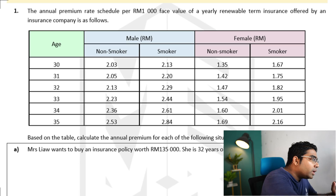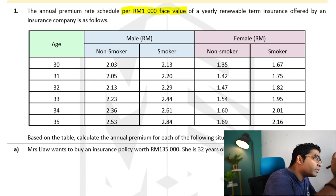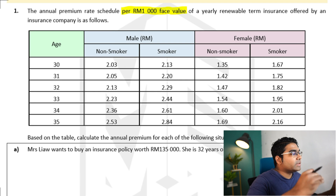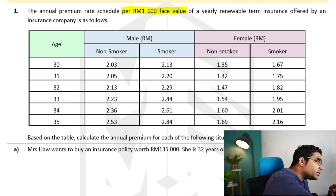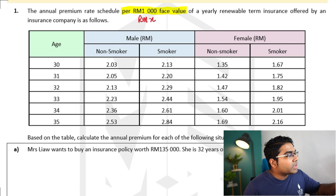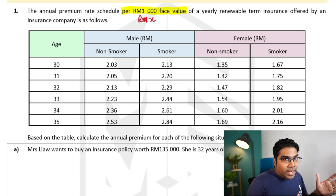Let's try some questions and apply this formula. The annual premium rate schedule per thousand ringgit face value — so the thousand ringgit here is the per X ringgit face value, this will be RM X — of a yearly renewable term insurance offered by an insurance company is as follows. This is just an example of the rates per thousand ringgit.